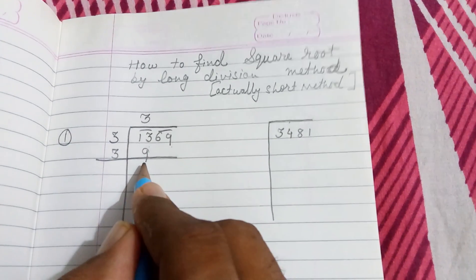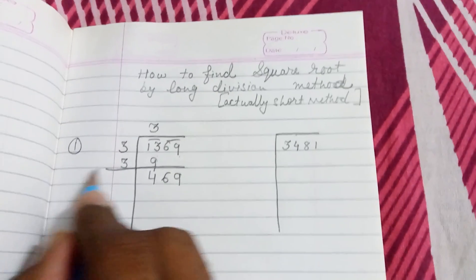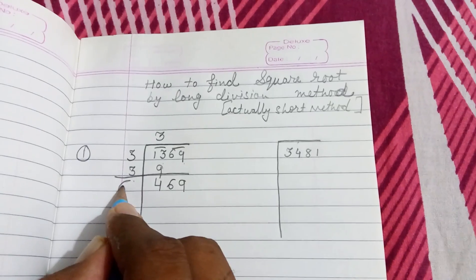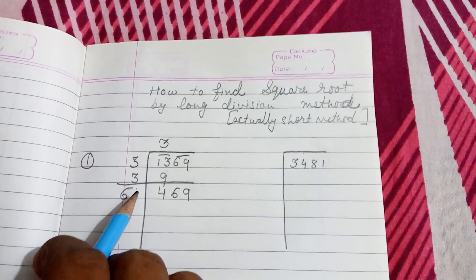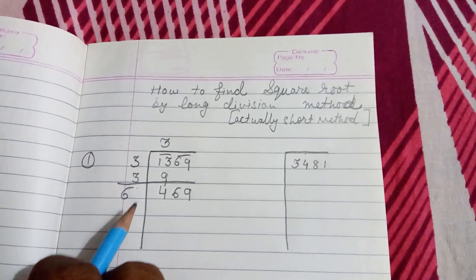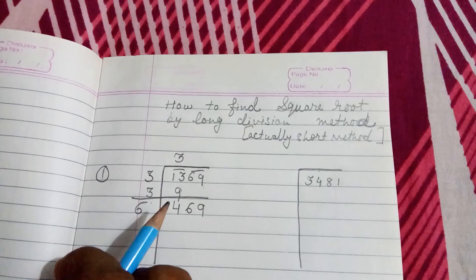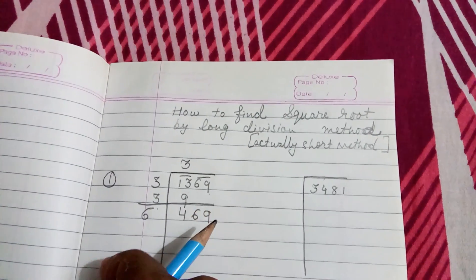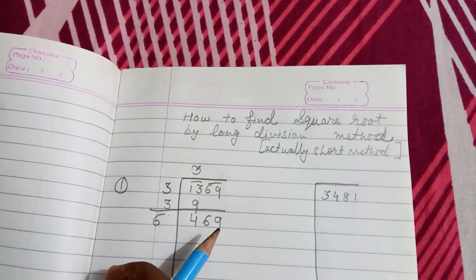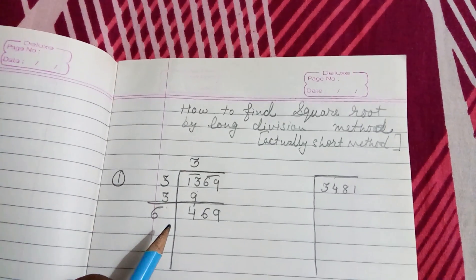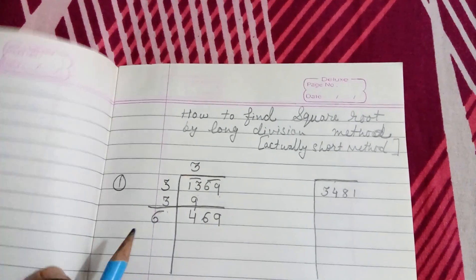Bring down 69, and here 3 plus 3 is 6. Now you have to check: 61×1, 62×2, 63×3, and the same way, the same number which you are taking here you have to take here also. We are getting 9 on the last digit. Whenever you are taking either 3×3 gives you 9, or 7×7 gives you 49. I think 67×7 will give you the perfect answer 469.